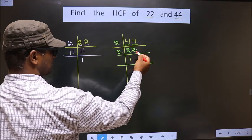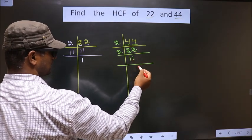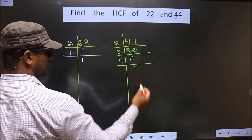First number is 2. When do we get 2 in the 2 table? 2 times 1 is 2. 11 is a prime number, so we take 11 and 1.